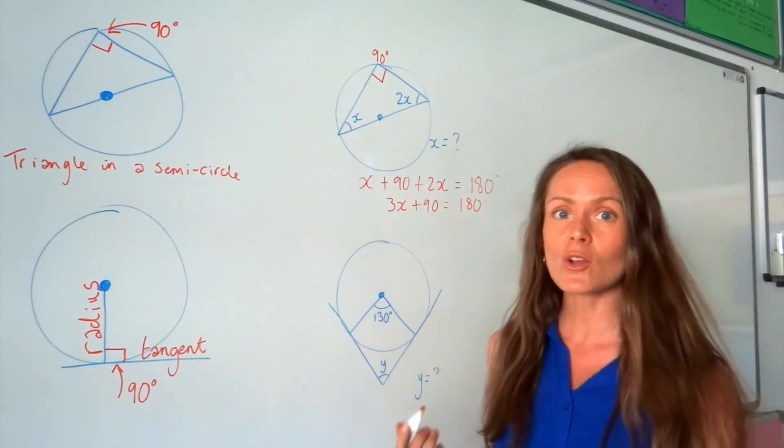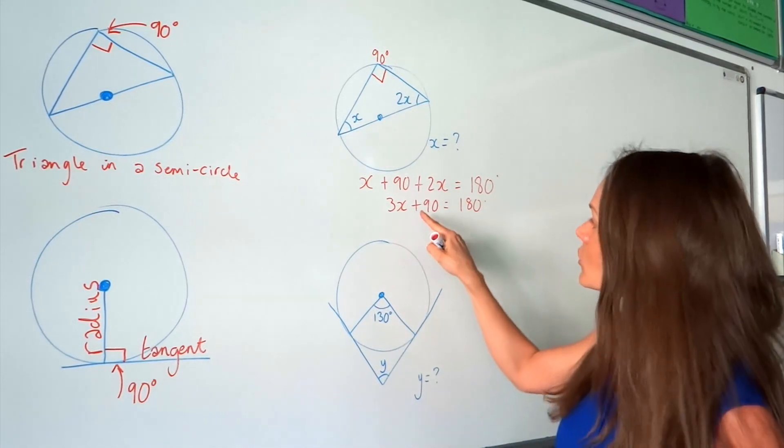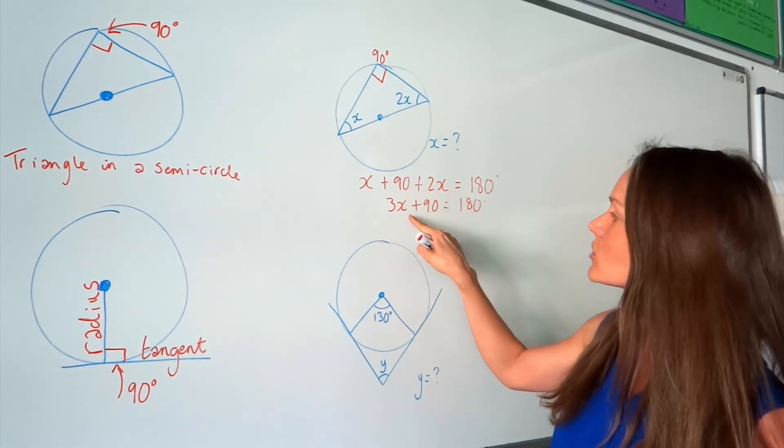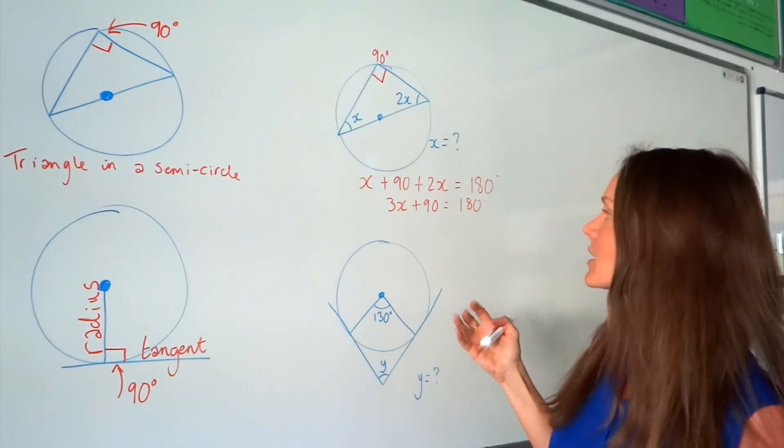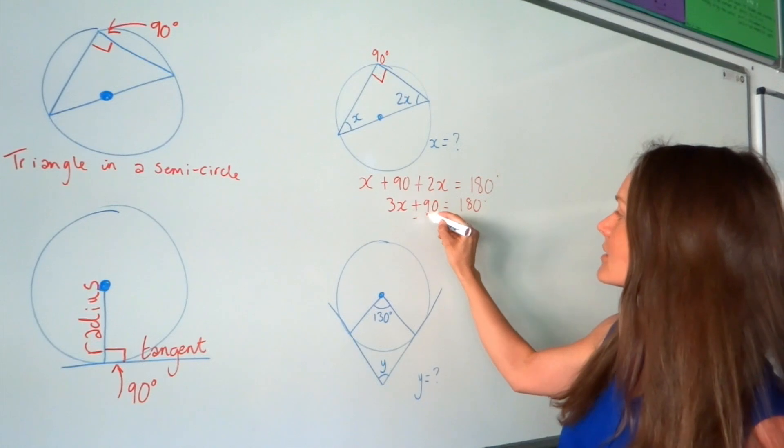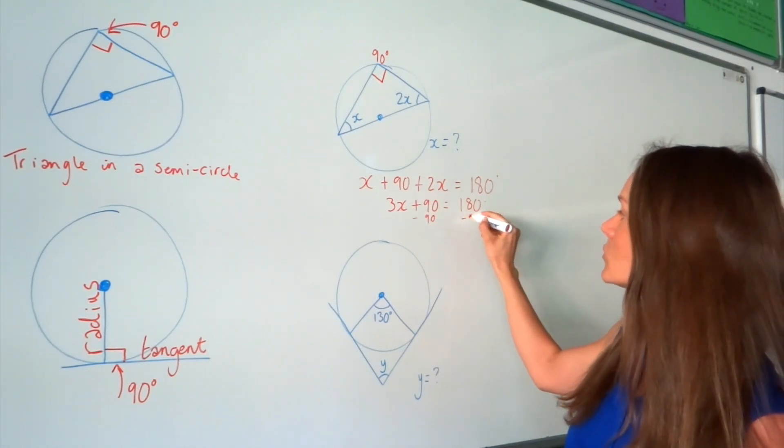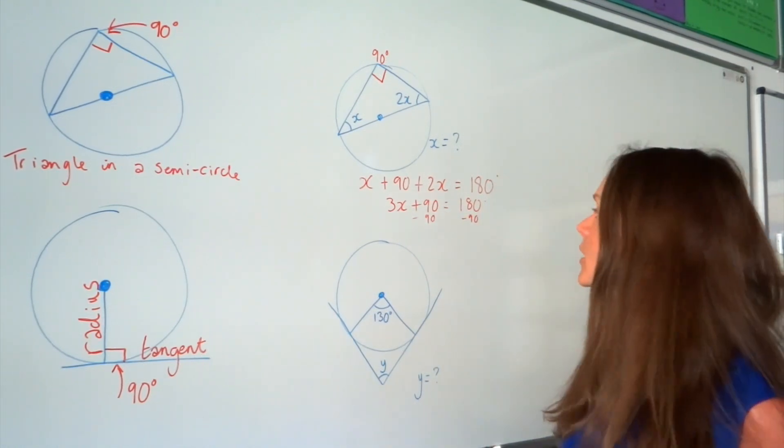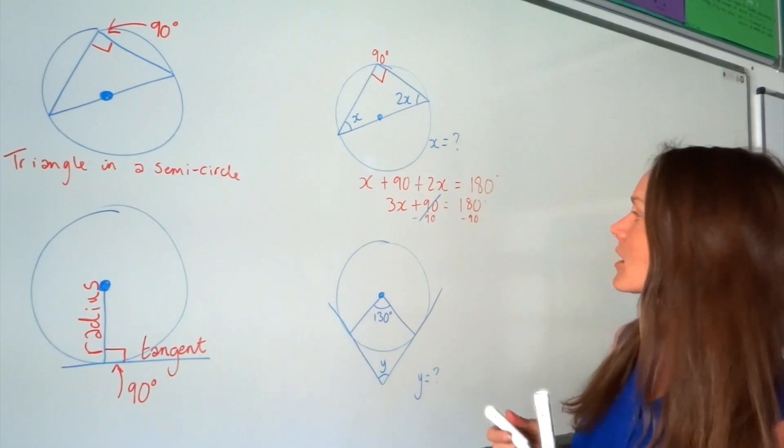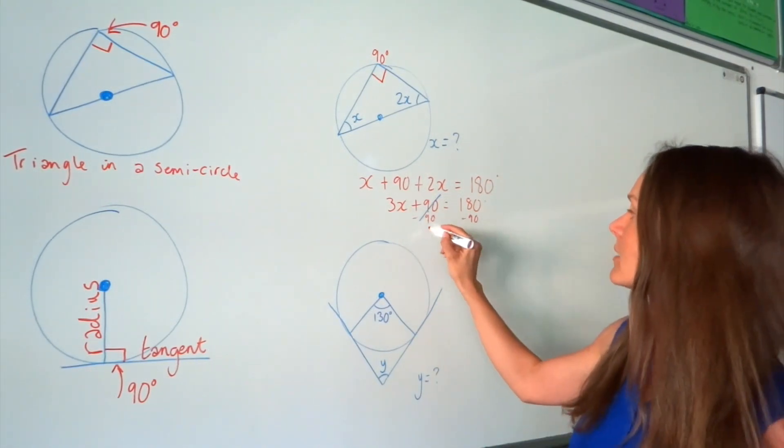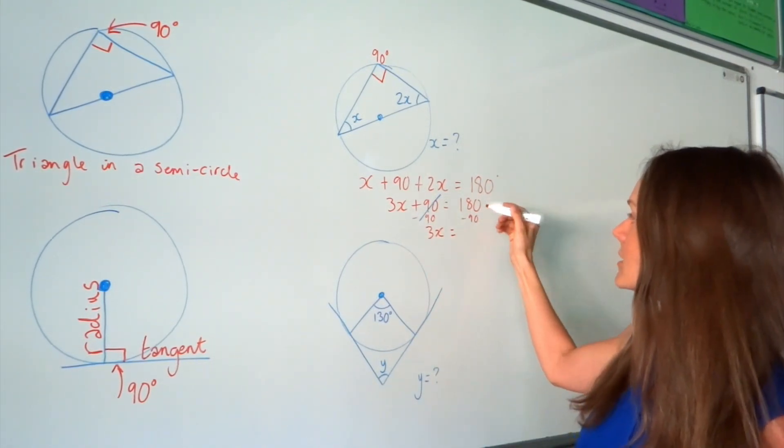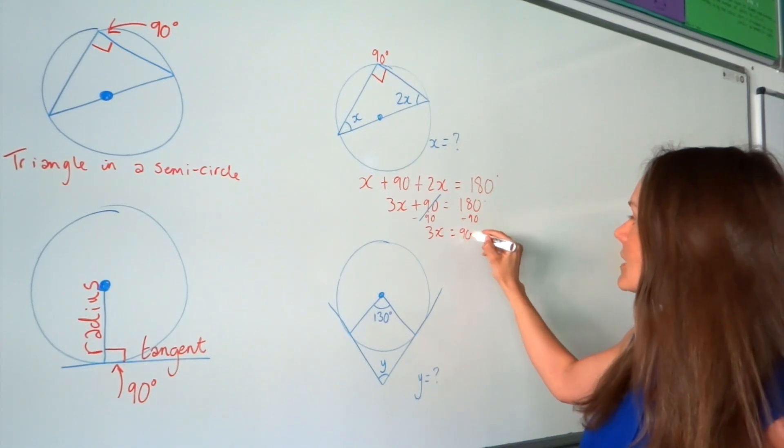So, remember when you're solving linear equations, you need to reverse all of the operations around X until X is by itself. So, I'm going to start by subtracting 90 and remember to do the same thing on both sides of the equation. On the left hand side, that just goes to zero and I'm left with 3X.